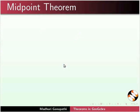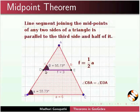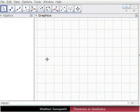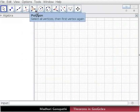Now we will prove the midpoint theorem. The line joining the midpoints of any two sides of a triangle is parallel to the third side and half of it. I have opened a new GeoGebra window. Let us draw a triangle ABC using polygon tool.